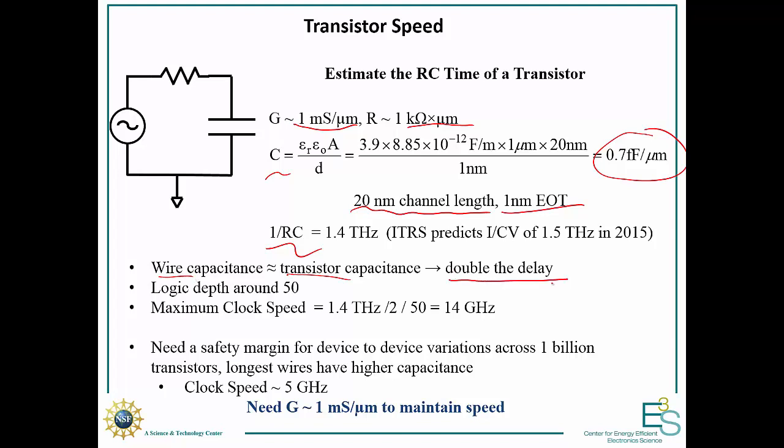And then we have to also consider a logic depth. If we say a worst case for the longest circuits, the logic depth is around 50, that now gives us a maximum clock speed of 1.4 terahertz divided by 2 divided by 50, or 14 gigahertz. It's becoming pretty close to our current clock speeds. Then you realize that we have a billion transistors in a single chip.